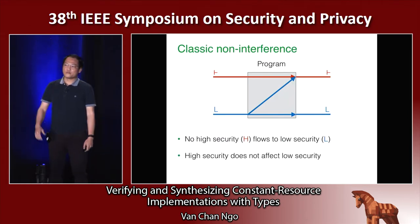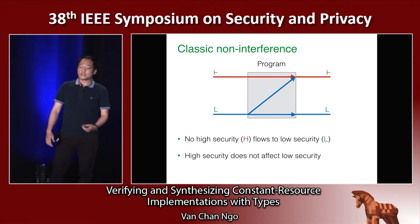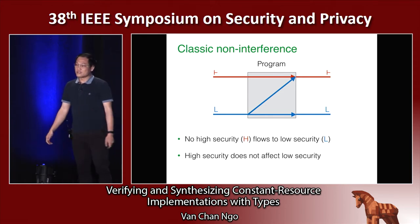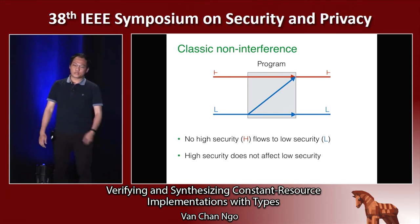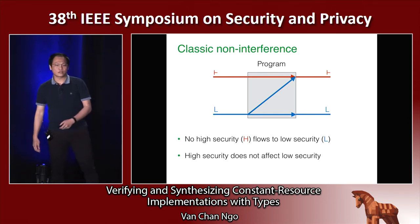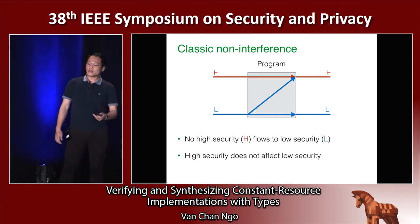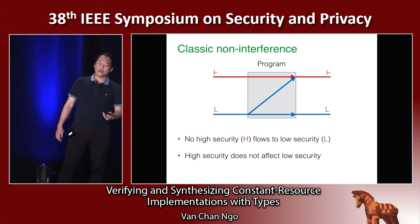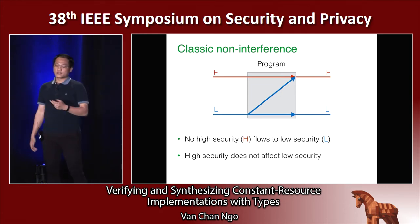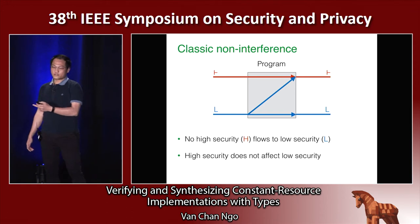If you are familiar with the information flow, then you know about the non-interference property. The non-interference property says that no high security information flows to the low security. In other words, the high security does not affect the low security.